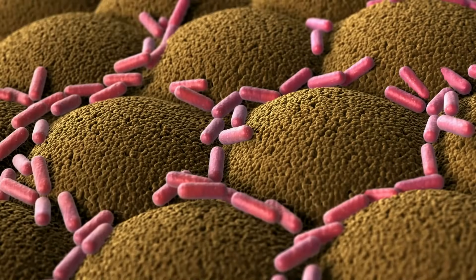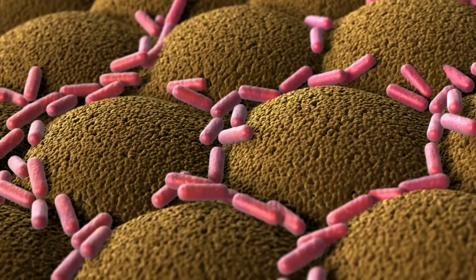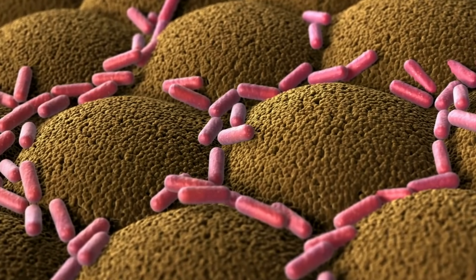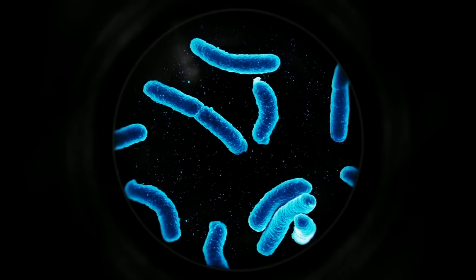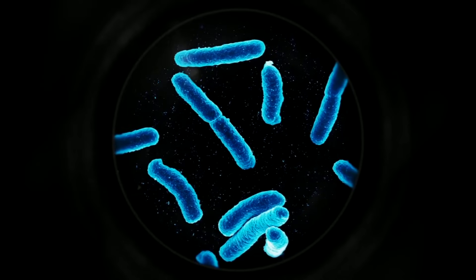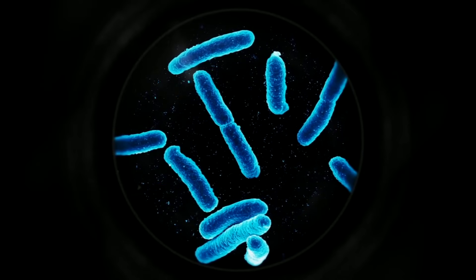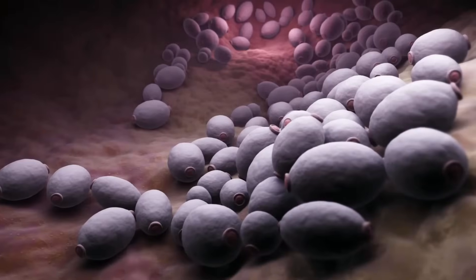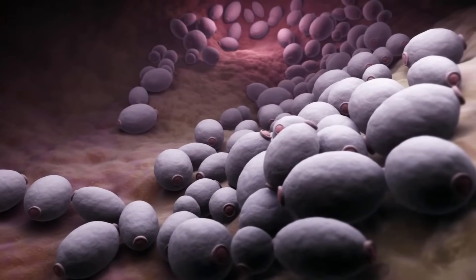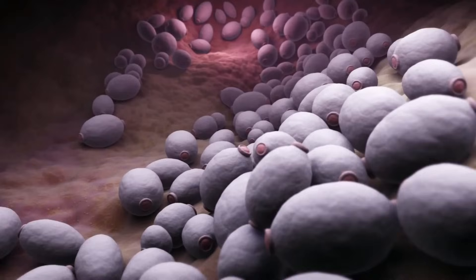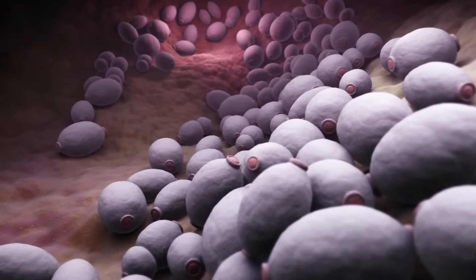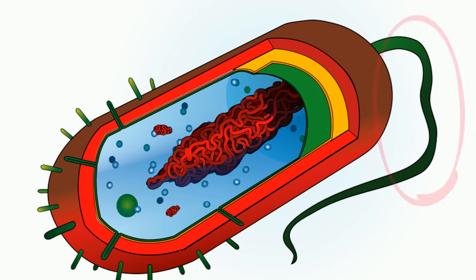Prokaryotes are simple unicellular organisms; however, this allows them to duplicate quickly. Bacteria are very diverse and they range from disease-causing pathogens to beneficial bacteria. Archaea are also diverse, but none are pathogenic, and many live in extreme environments. Some prokaryotes have a flagellum that allows them to move, but they do not have membrane-bound organelles such as mitochondria or a nucleus.